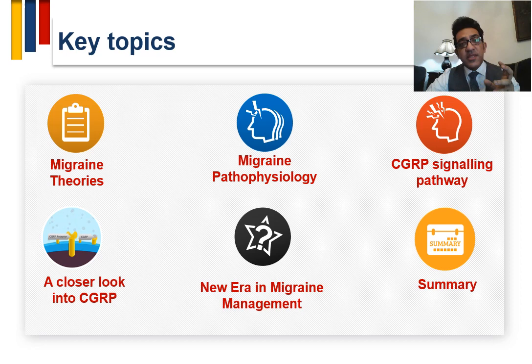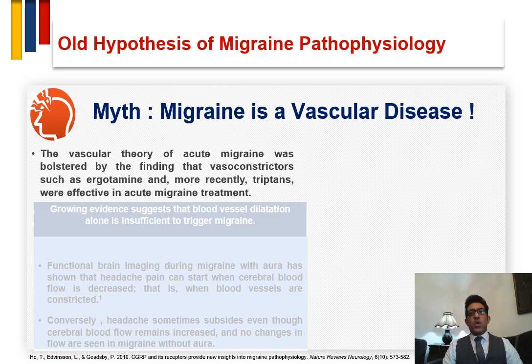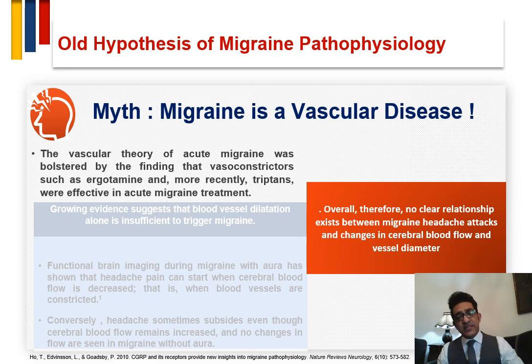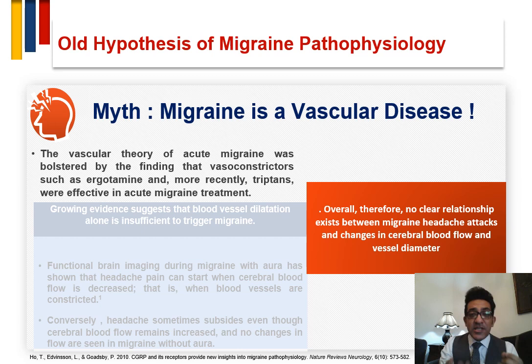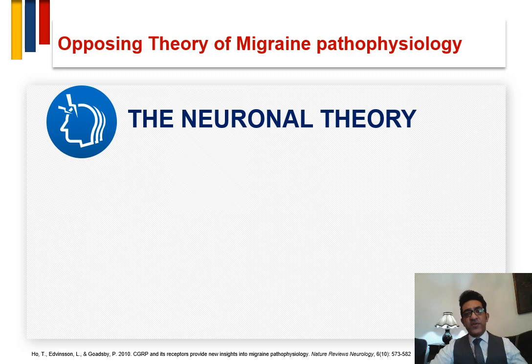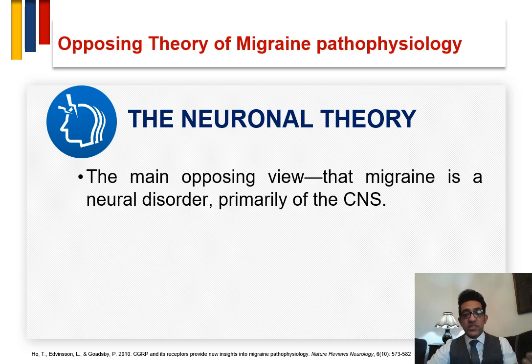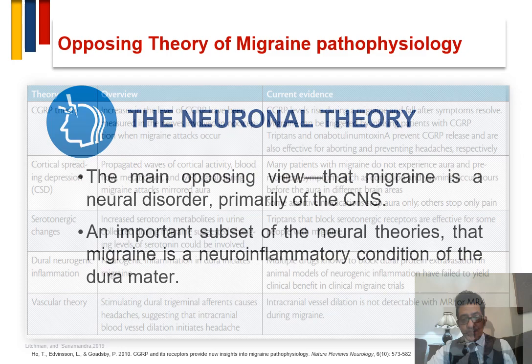Starting with migraine theory: we all know the old hypothesis of migraine pathophysiology being a vascular disease. However, there is no clear relationship between the headache and the diameter of the blood vessel. Sometimes we might have headache attacks despite the vessels being constricted, and sometimes the headache may be relieved despite the vessels still being widened and dilated. So the opposing theory is that migraine is a neuronal disorder of the CNS.